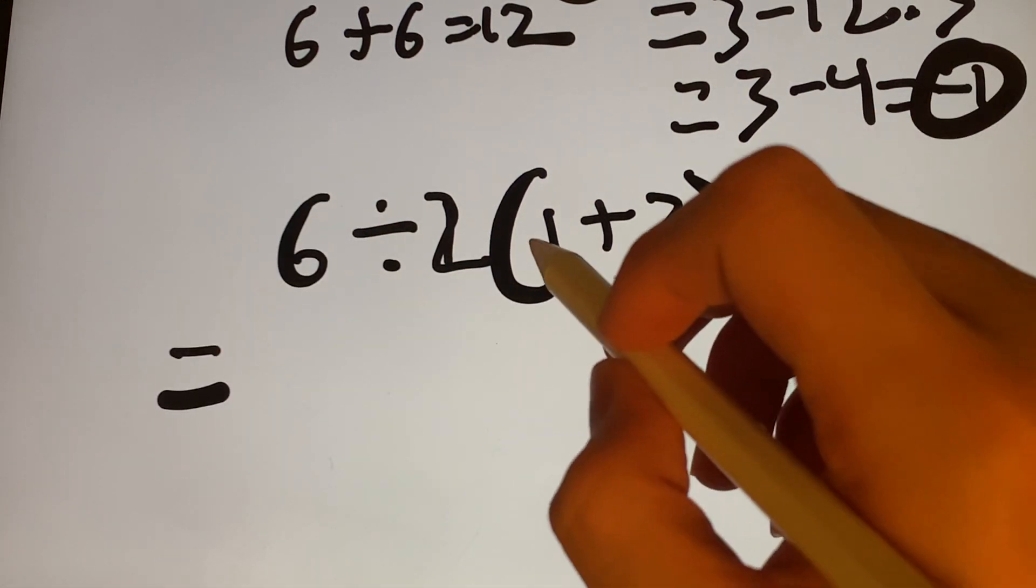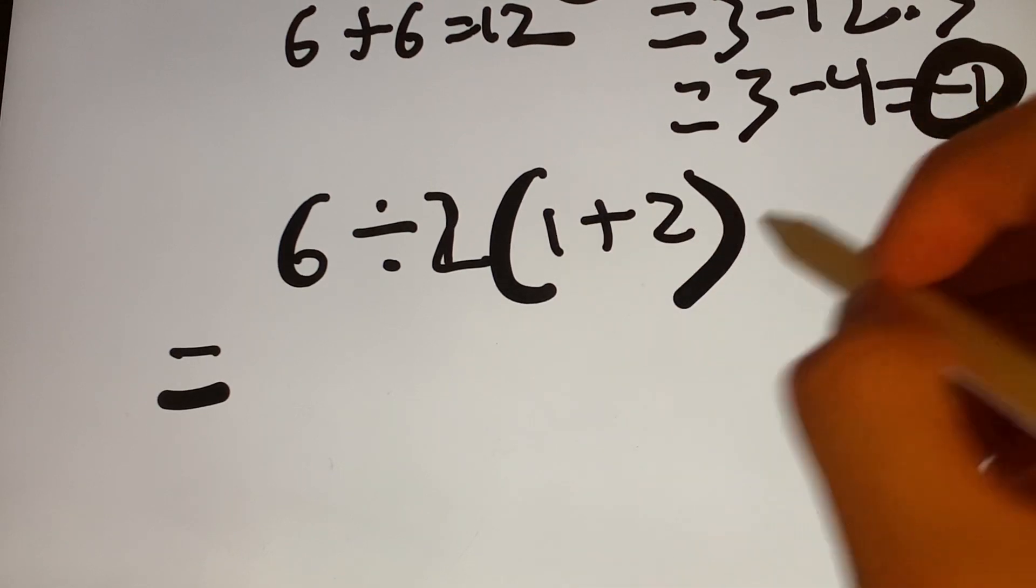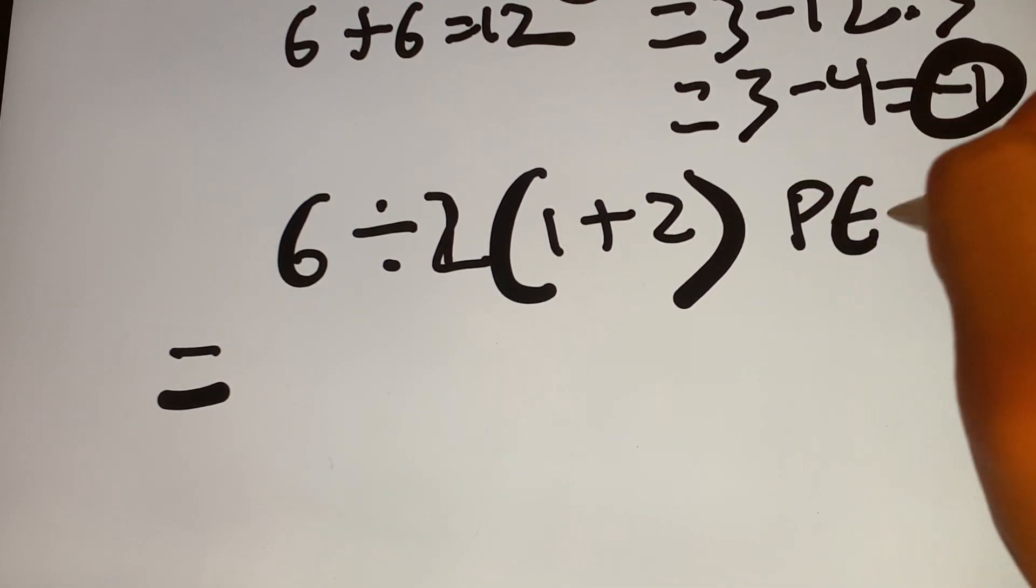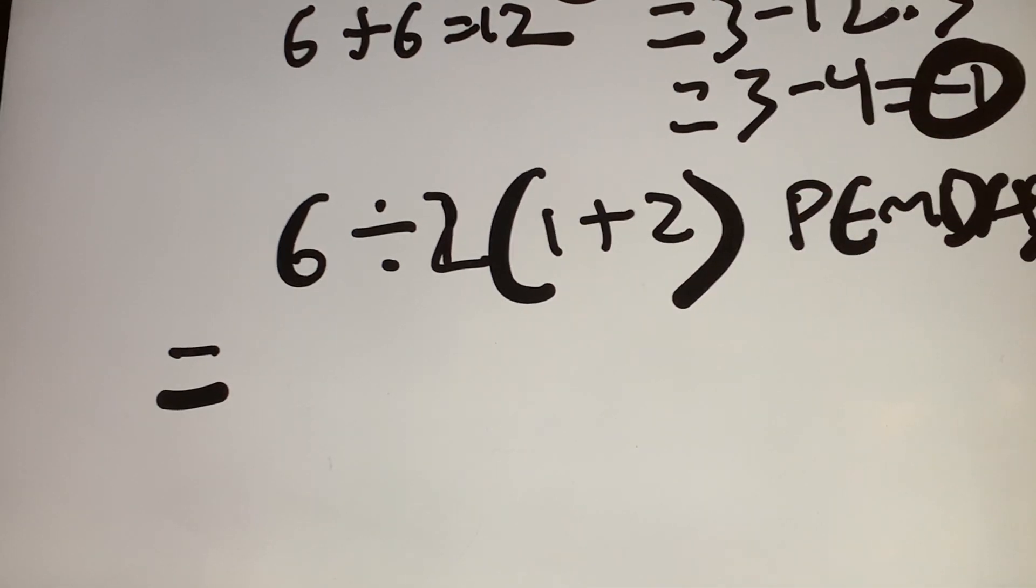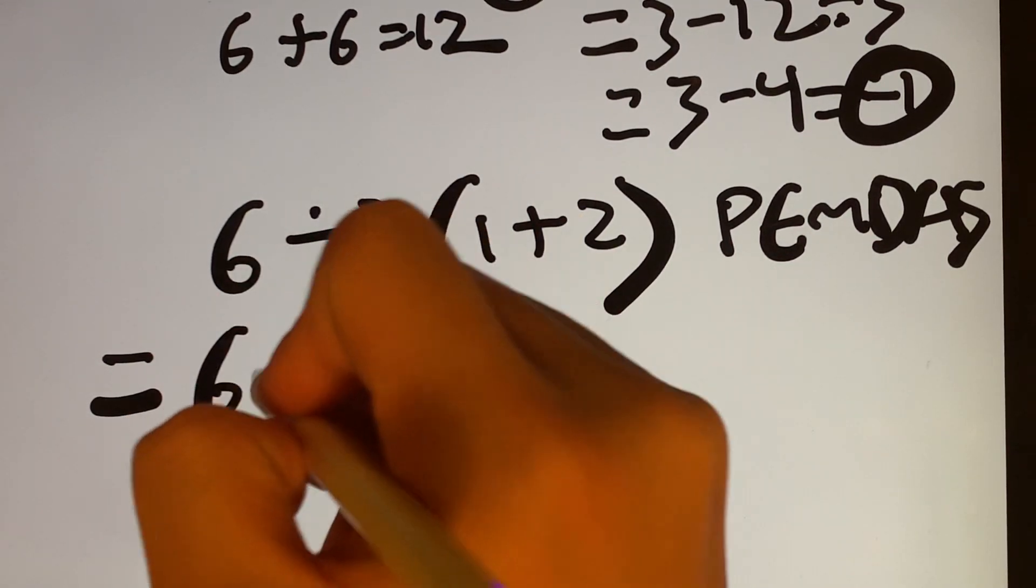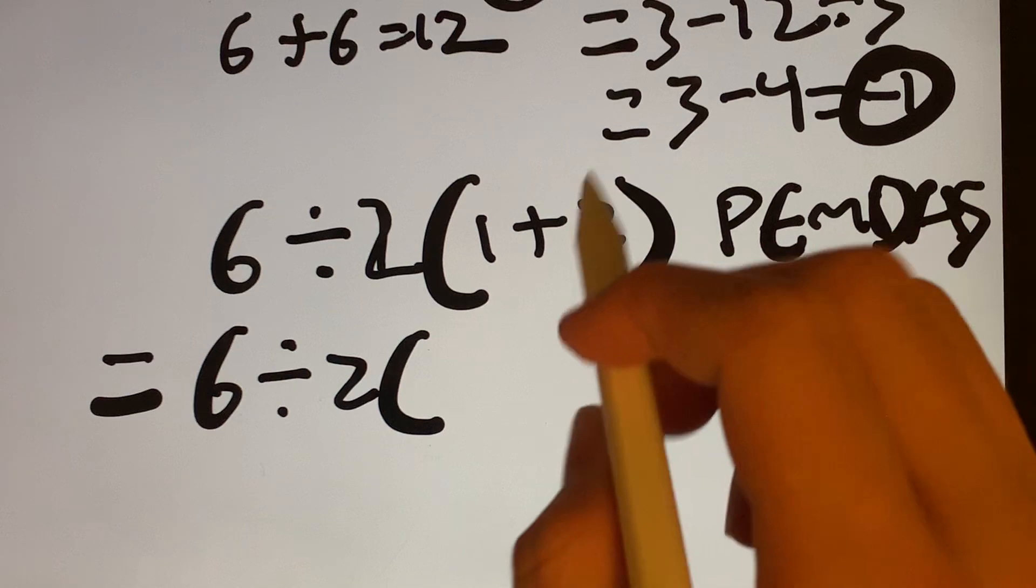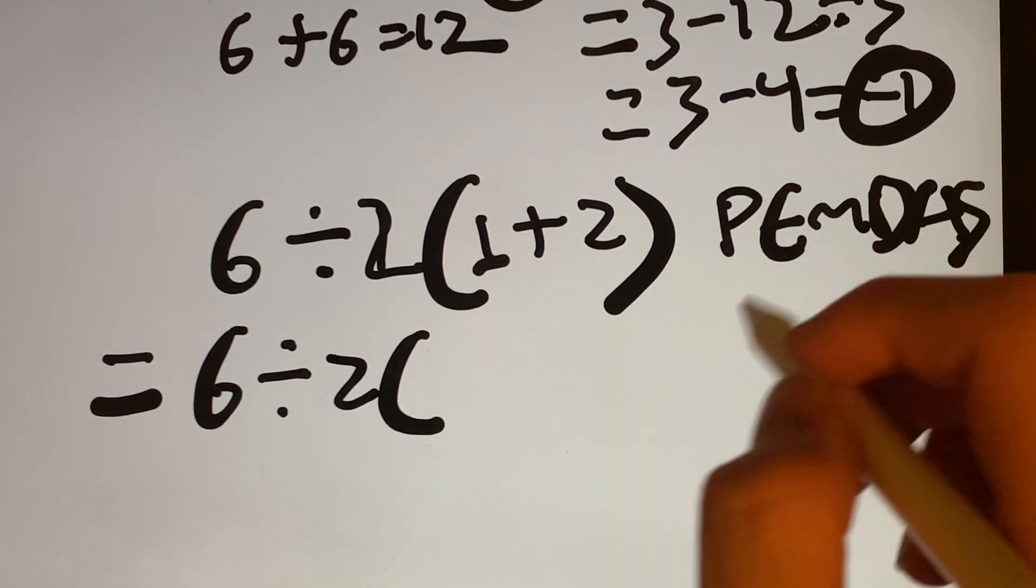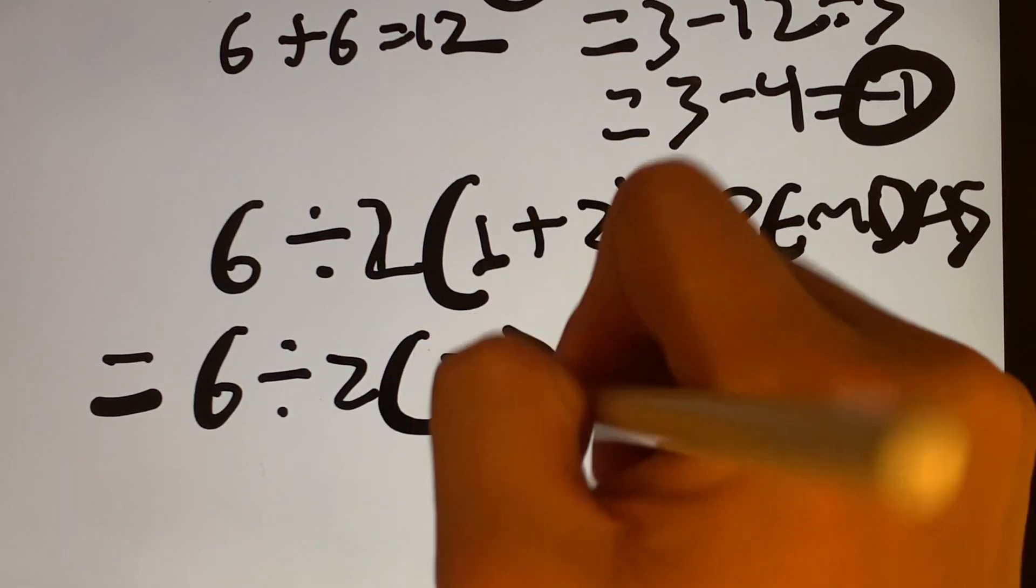Well, I see that we have parentheses, right? So you always do parentheses first because we have PEMDAS. Remember, PEMDAS. And that means that we have to do parentheses first. So this becomes 6 divided by 2. And inside the parentheses, I see 1 plus 2. There's no other operations, meaning inside it's just 3.